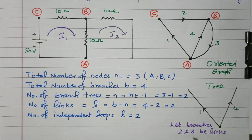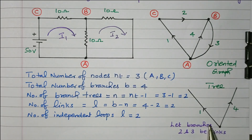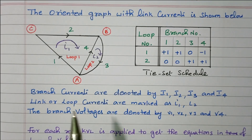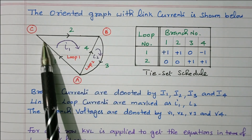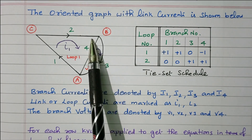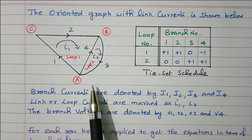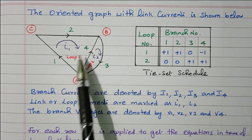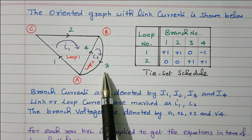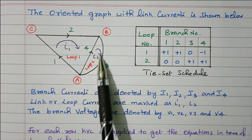This is the tree. In it we draw link branches 2 and 3. So tree branches are 1 and 4, and links are 2 and 3. The oriented graph with link currents is shown below. There are three nodes A, B, C and four branches. We consider branches 1 and 4 as the tree and branches 2 and 3 as links. There are two loops: loop 1 with current I1 and loop 2 with current I2.